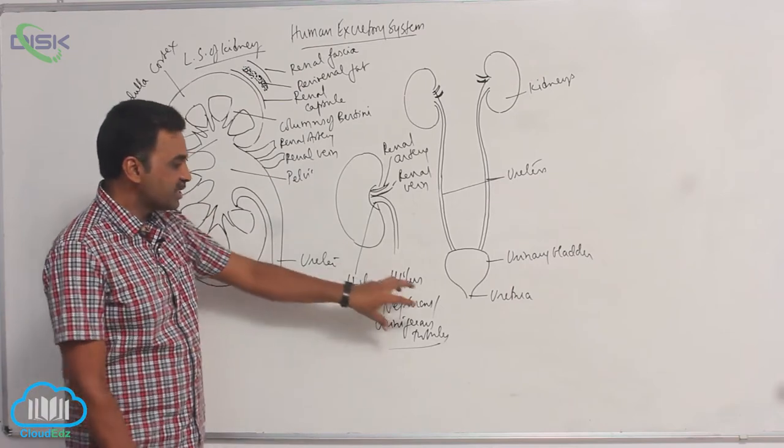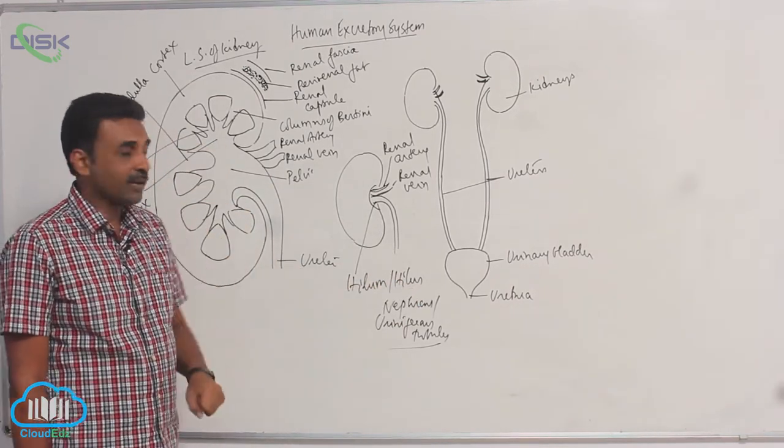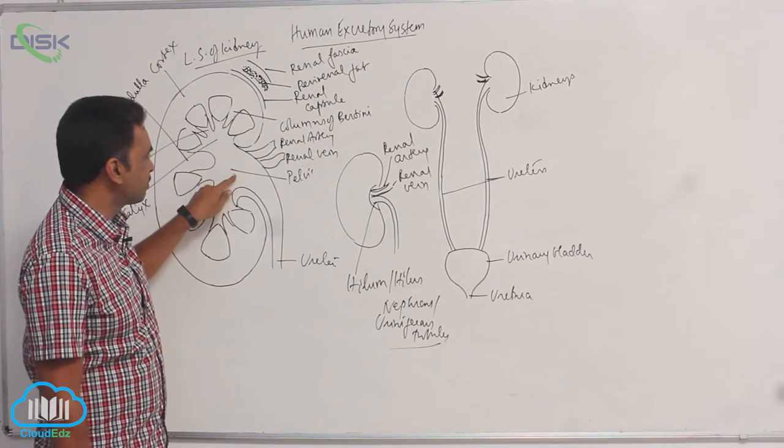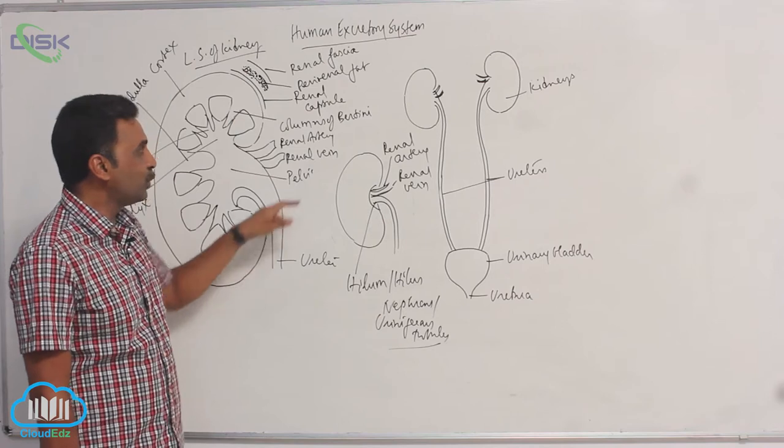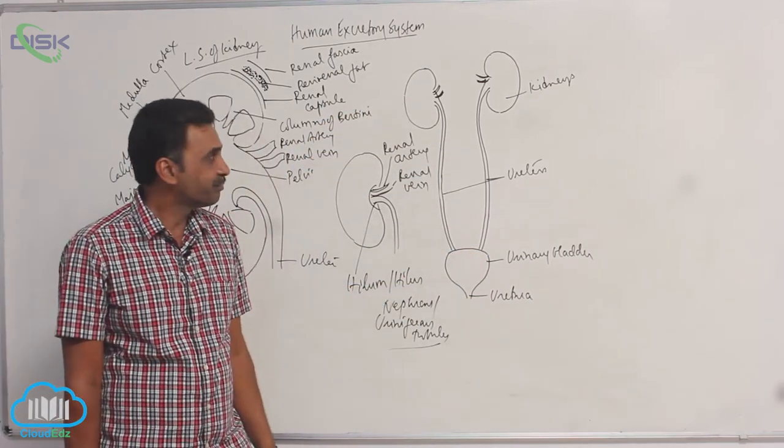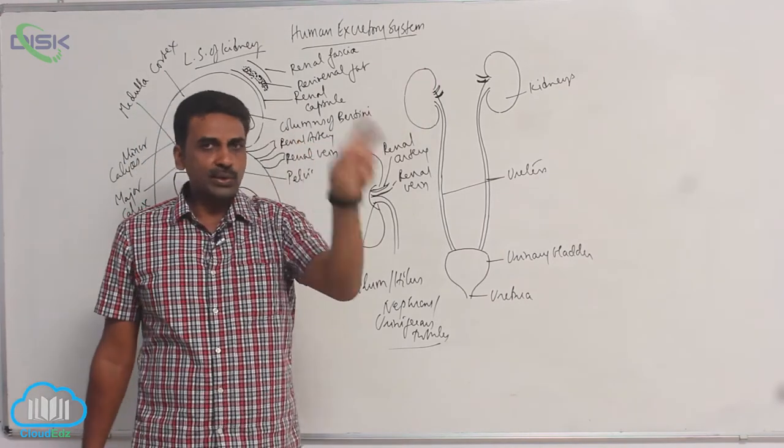That means they actually produce urine. And that urine enters into minor calices, major calices, pelvis, and through ureter, that urine comes into urinary bladder. Now kidneys produce urine.